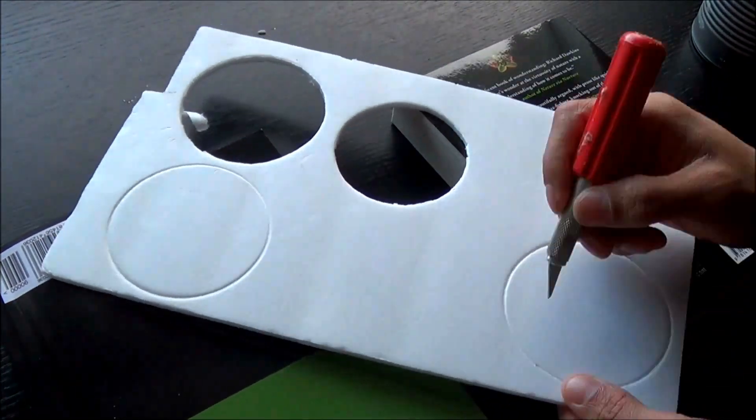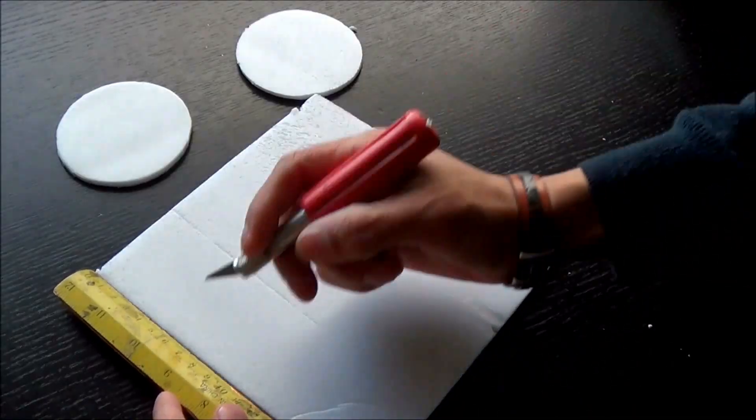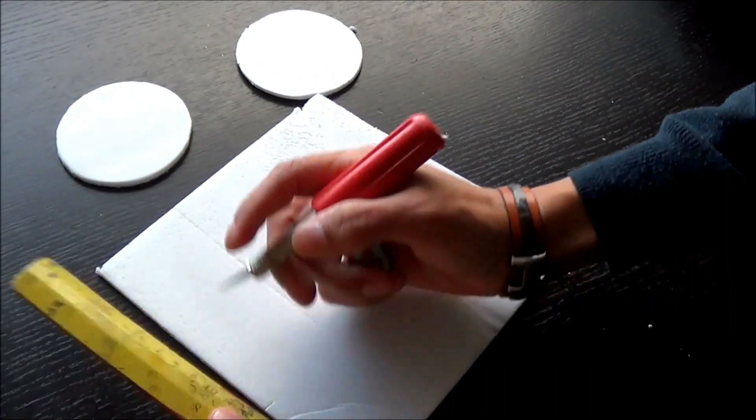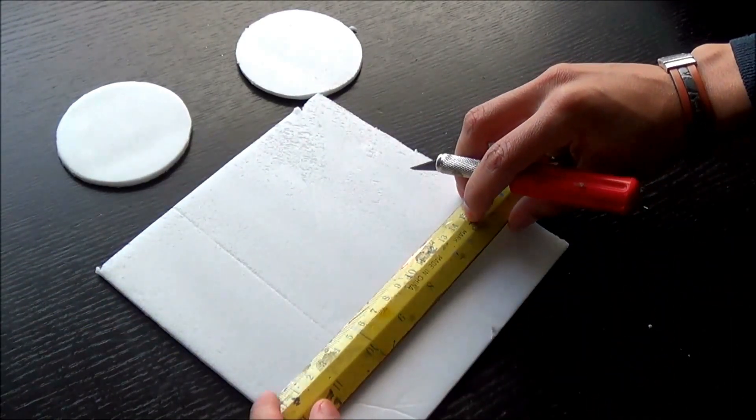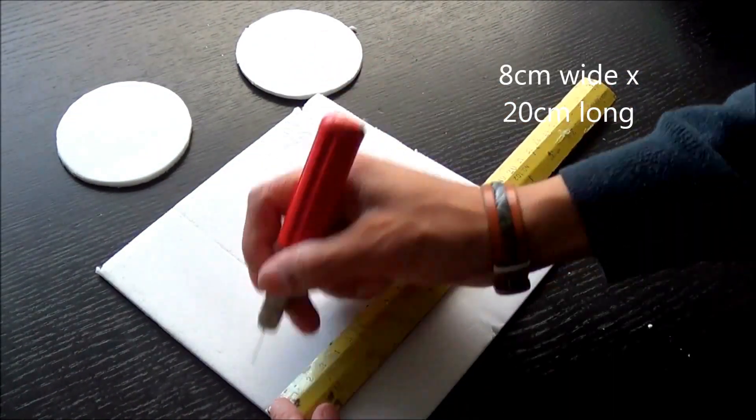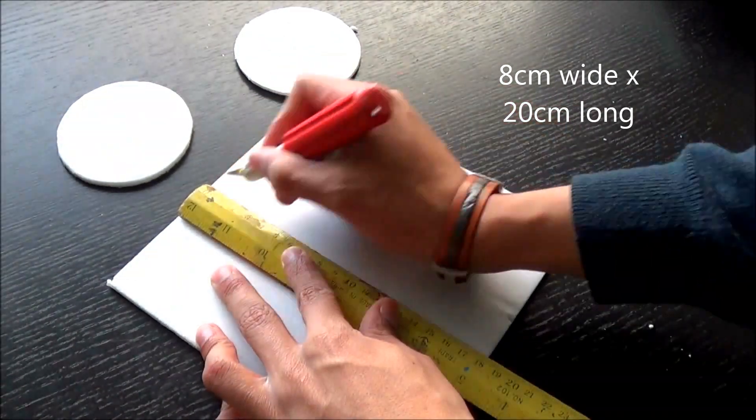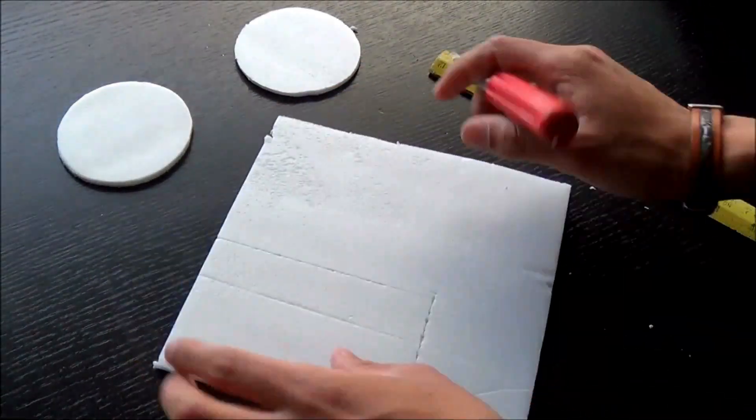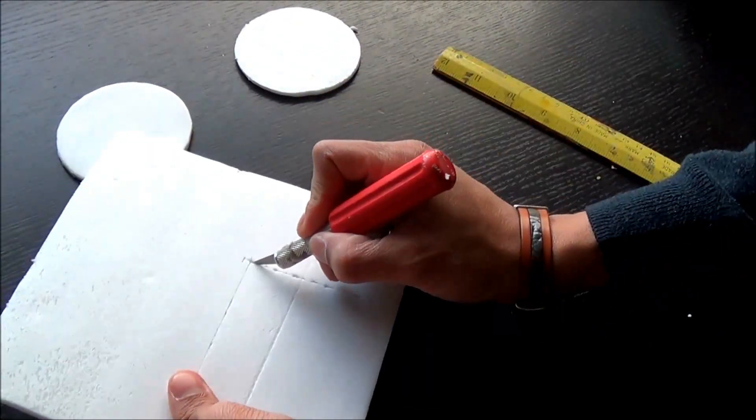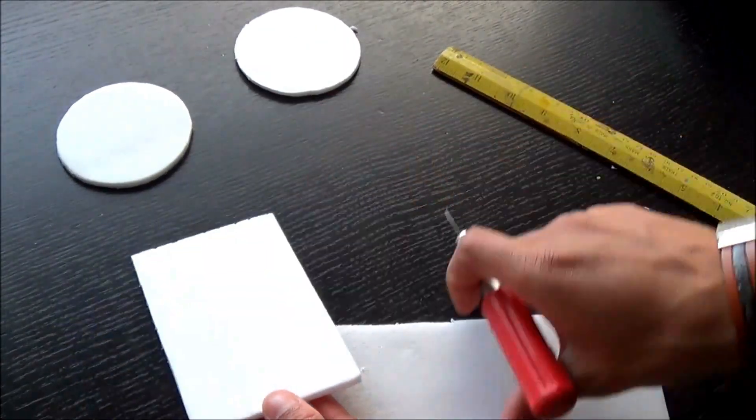You'll have to do four of these all the same as the first one. Now we're going to move on to the body of the car, a rectangle with dimensions eight centimeters wide by 20 centimeters long. Initially I made mine eight by twelve and then realized it was too short and had to make it longer afterwards, so you can save that trouble by just making yours eight by 20 off the bat instead of eight by 12 like I did in the video.